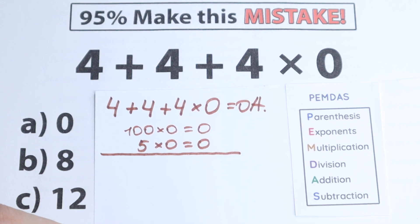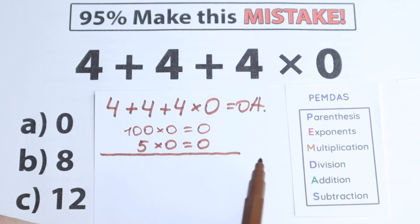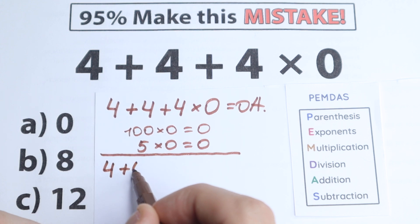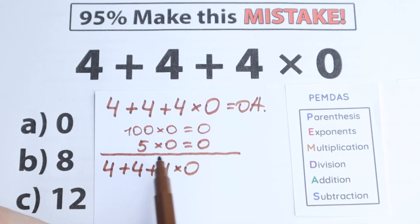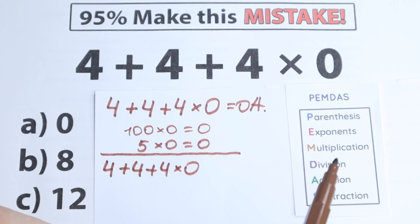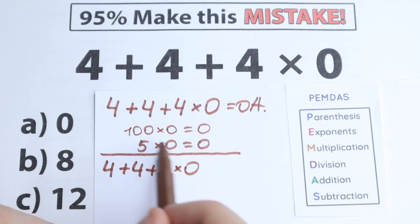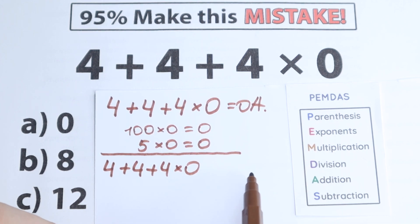I know that whether you use BODMAS or PEMDAS, you'll get the same answer in our case. So let's rewrite the question: 4 plus 4 plus 4 times 0. Let's solve it according to PEMDAS. The first step is parentheses — we scan the expression and I don't see any parentheses, so we can skip this step. The next step is exponents — we can skip this too, because we don't have any exponents, cubes, or powers. We only have the number 4.